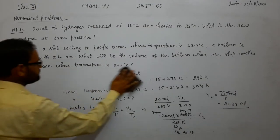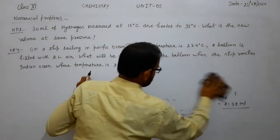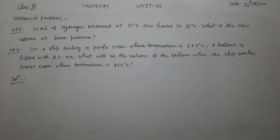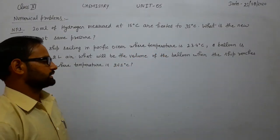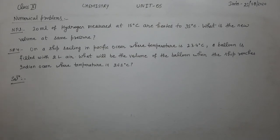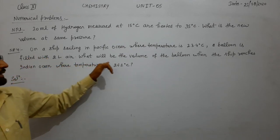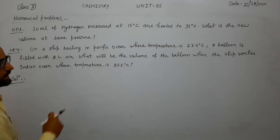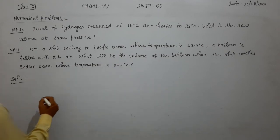Numerical problem 4: a ship is sailing in the Pacific Ocean. The temperature is 23.4 degree Celsius, and a balloon is filled with 2 liter of air. What will be the volume of the balloon when the ship reaches the Indian Ocean where the temperature is 26.1 degree Celsius?